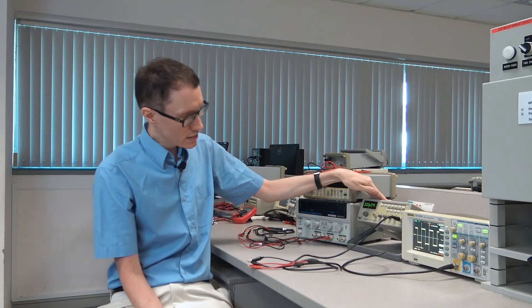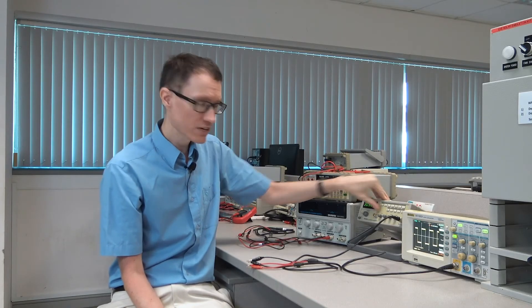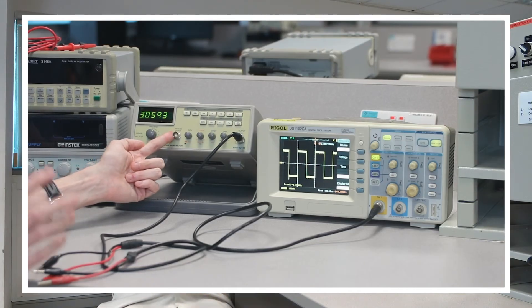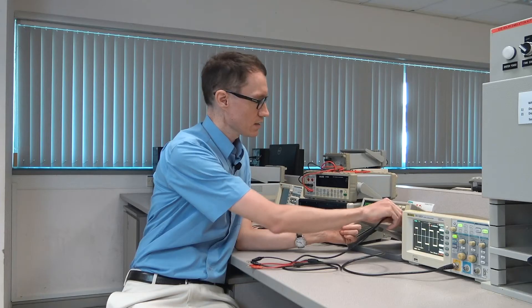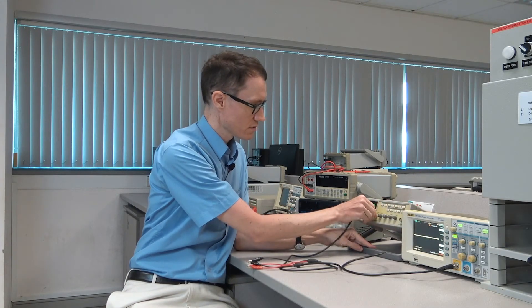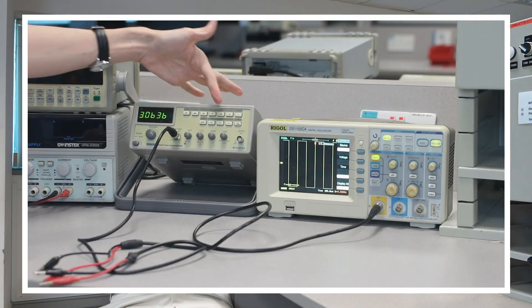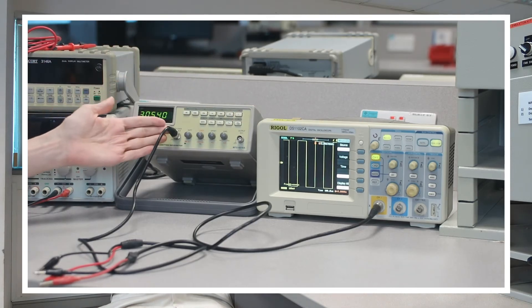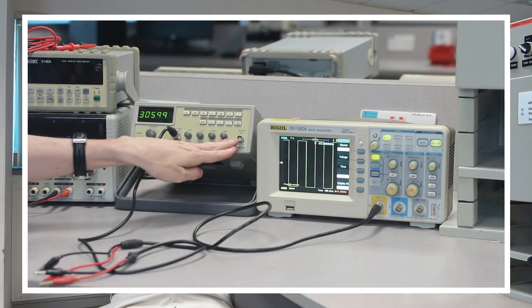But it is worth pointing out that sometimes these function generators have two output ports. One of them, it's labeled here TTL CMOS. That means it's going to give us a signal that's only a square wave. So even if I pick sine wave, a square wave is going to come out here at the same frequency as the standard output.